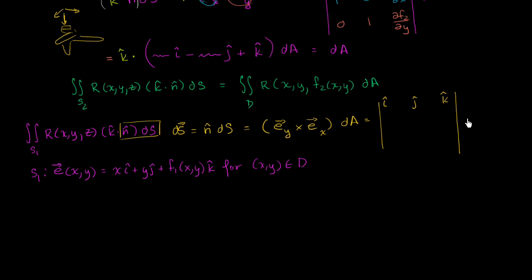The partial of e with respect to y, partial of e with respect to y is 0, 1, partial of f1 with respect to y. Partial with respect to x is going to be 1, 0, partial of f1 with respect to x. When you evaluate this whole thing, this is going to be equal to some business times i minus some other business times j.